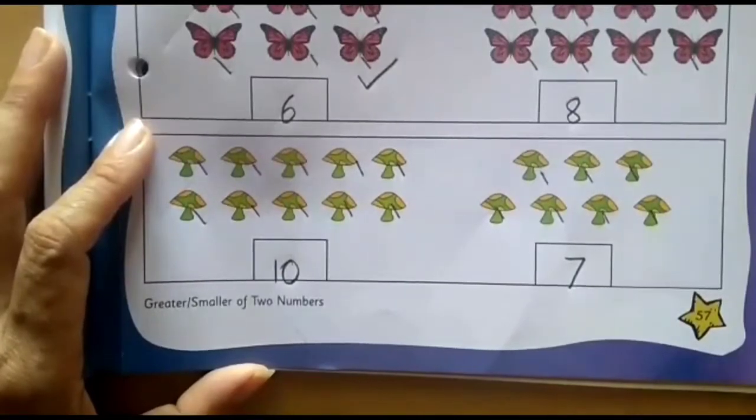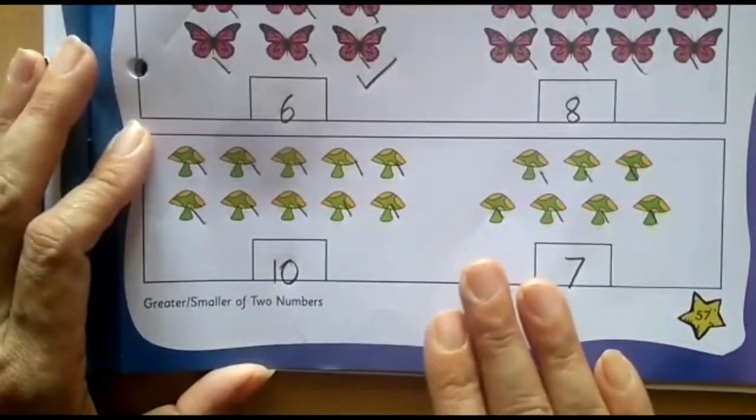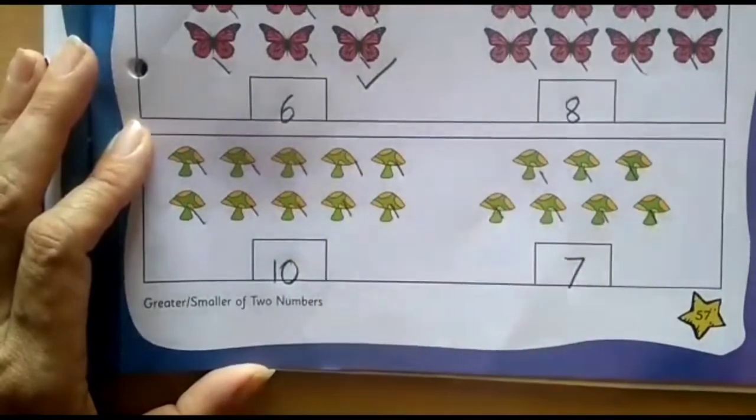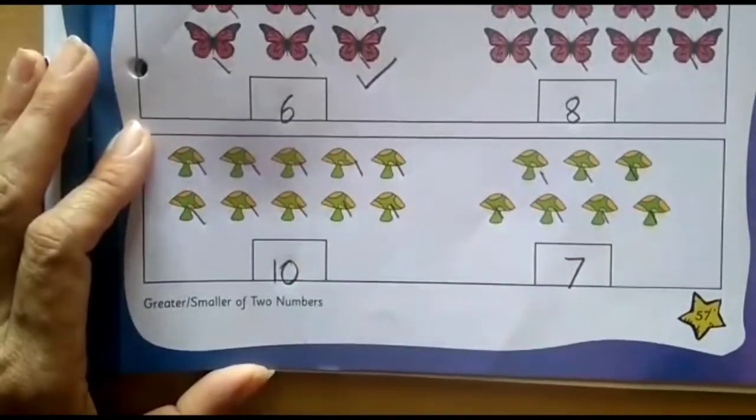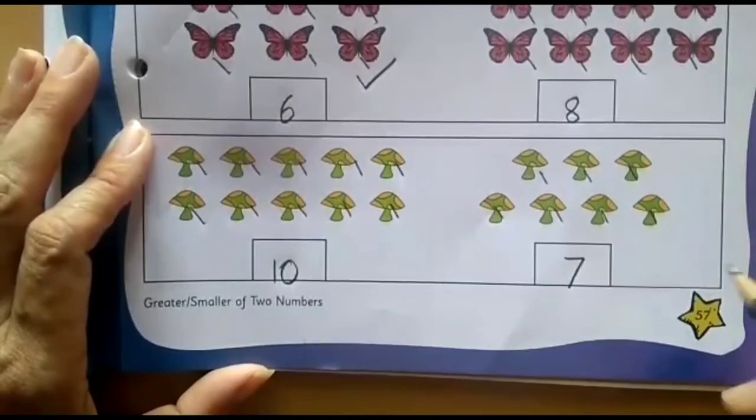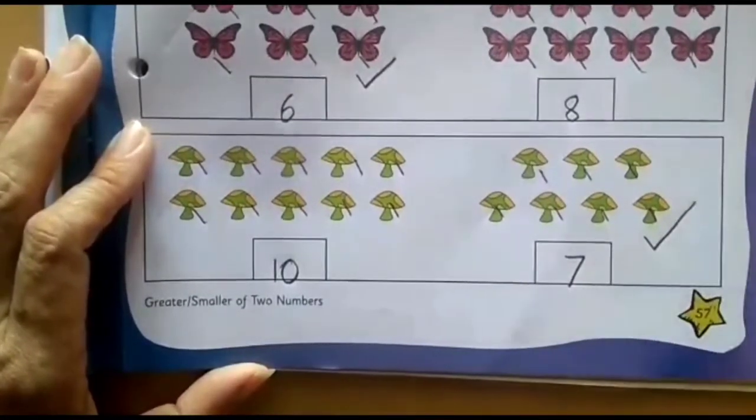So here even if you look at the pictures, you can easily understand where smaller number of mushrooms are there. Tell me between these two sets and see the numbers also. So first I said 7, then 8, then 9 and then 10. So 7 is a smaller number. So what do I need to do? I need to put a tick mark here. Right?